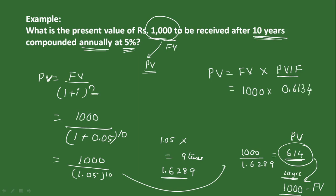Multiply 1,000 by 0.6139 to get ₹614. This is the same answer. Using the formula or using the present value interest factor (PVIF) table gives the same answer.